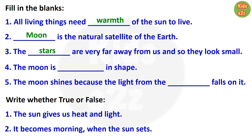Question 4: The moon is round in shape. Question 5: The moon shines because the light from the sun falls on it.